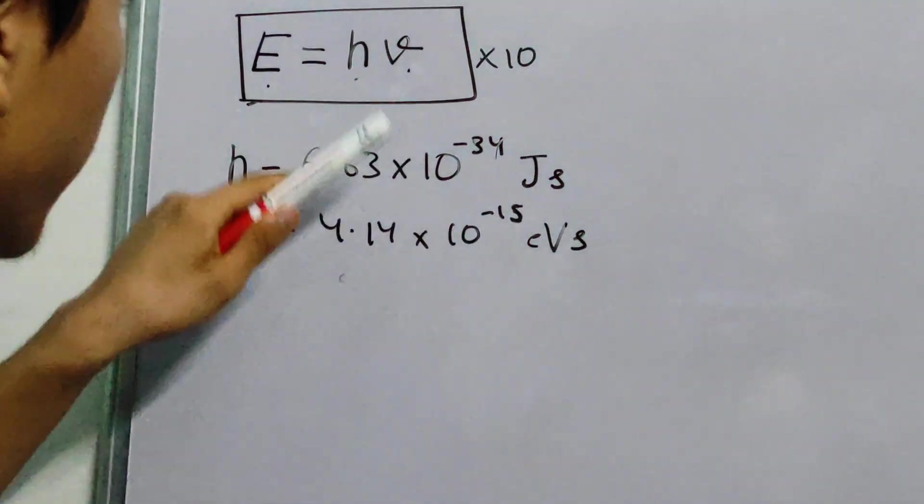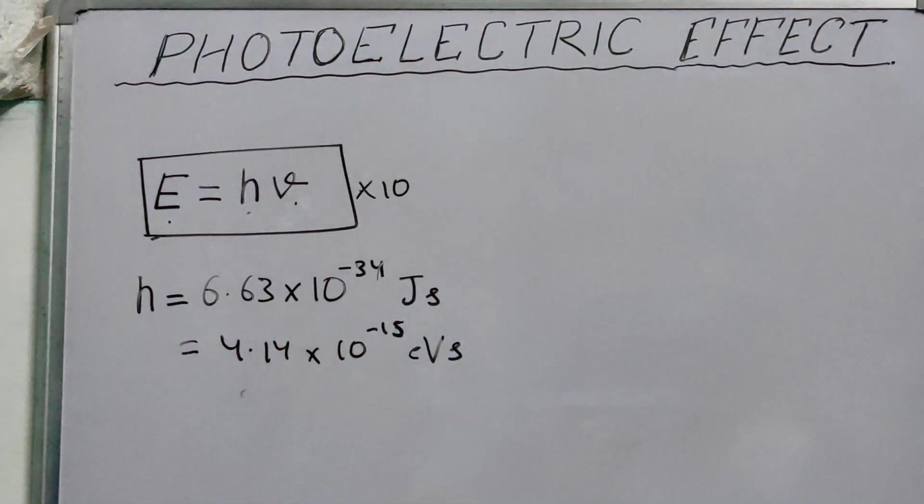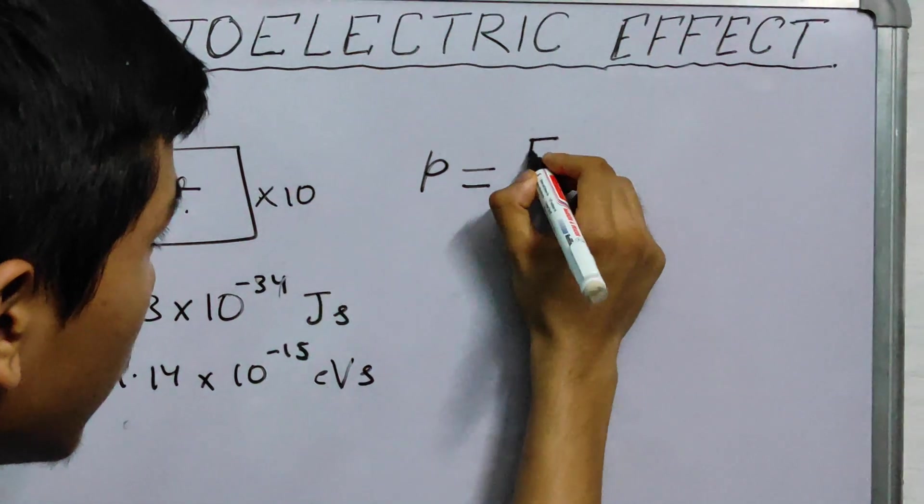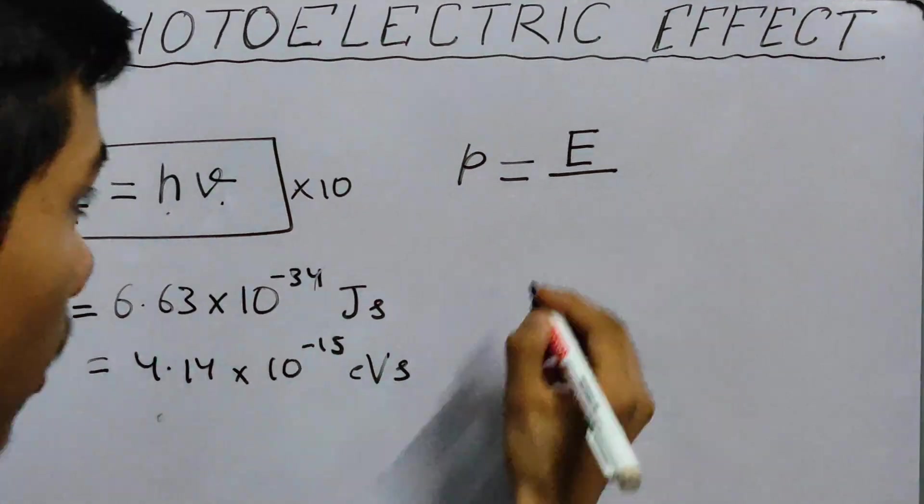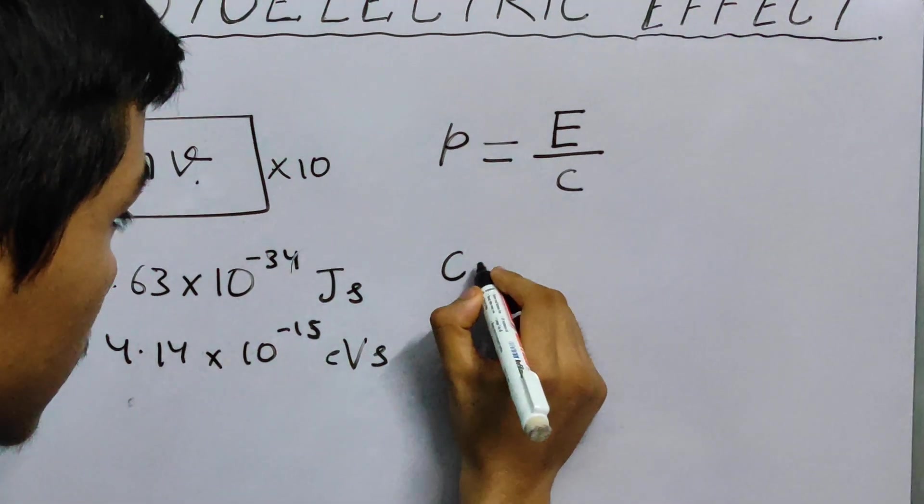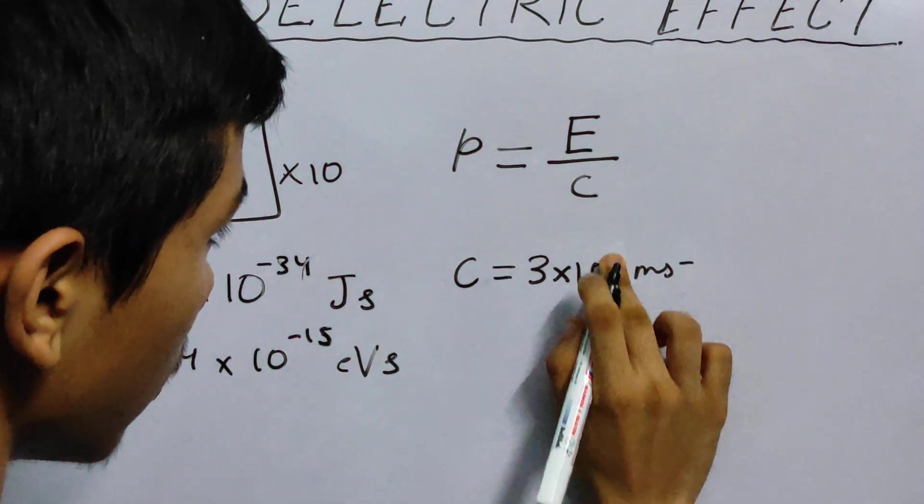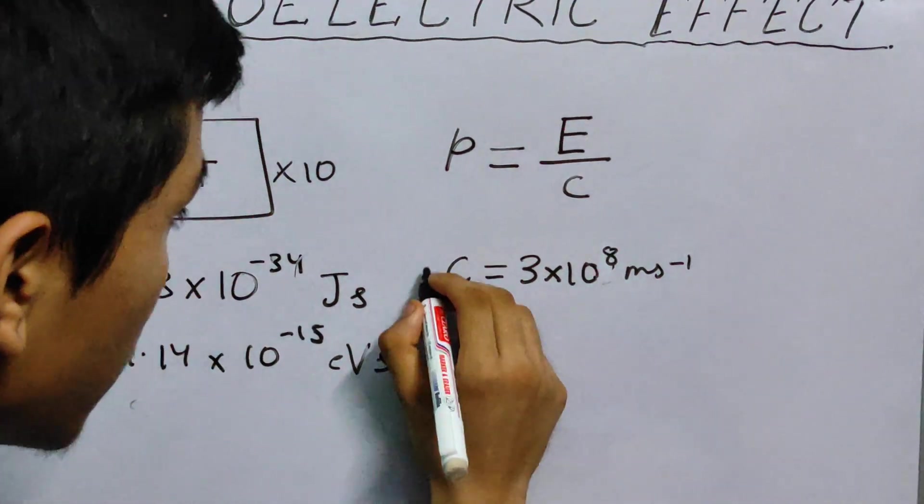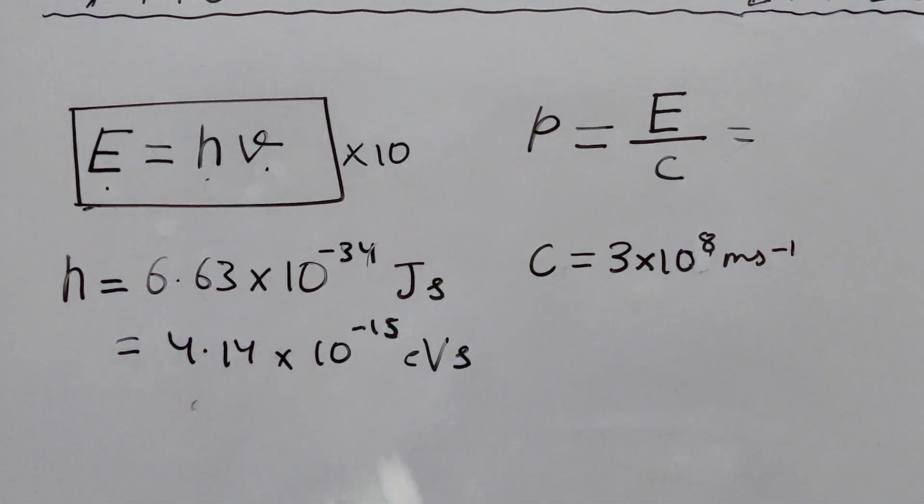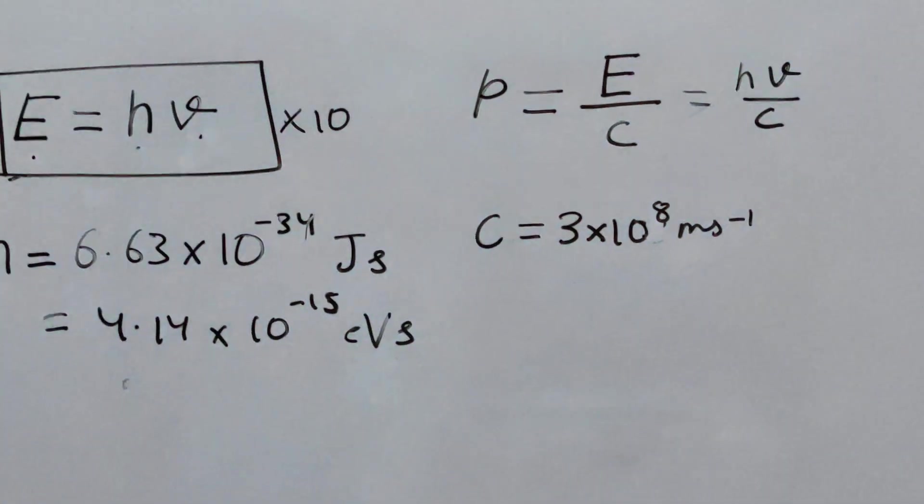Another important factor associated with it is the momentum. The momentum, P, is given as the energy divided by C, where C is the speed of light. What is the value of C? Speed of light. It is somewhat 3 into 10 to the power 8 meters per second. That's a very useful thing. Another way to write it is, P is equal to, we substitute this value, H nu by C.